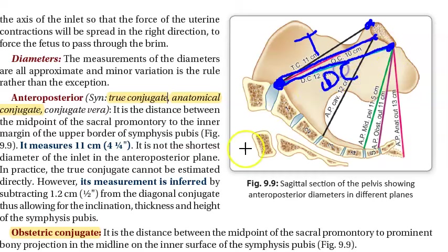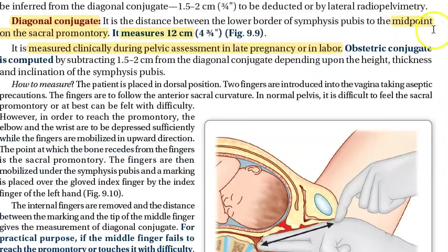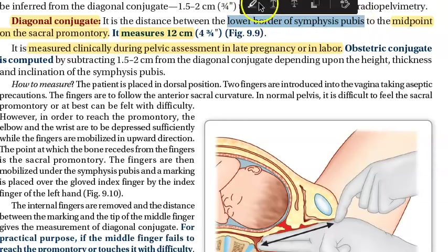The diagonal conjugate can be measured by putting your hand inside. It is measured from the midpoint of the sacral promontory to the lower border of the symphysis pubis. That becomes the diagonal conjugate, and it measures 12 centimeters.